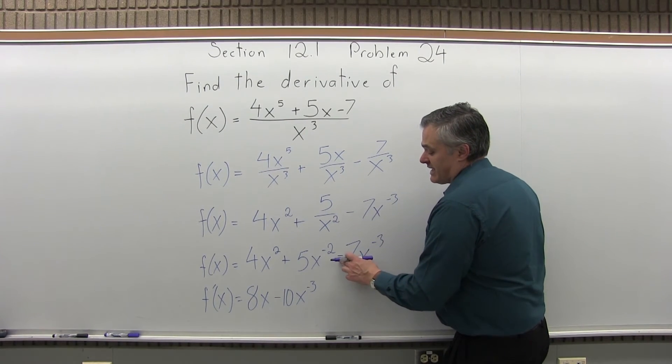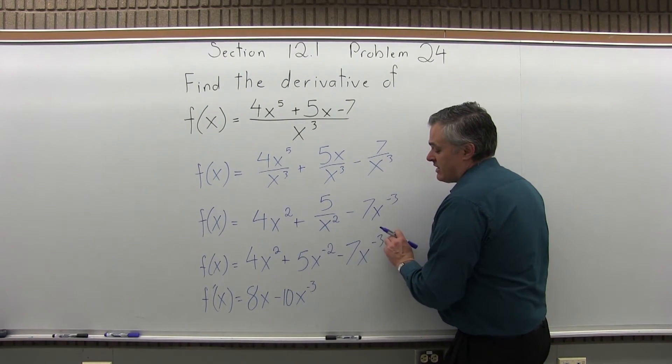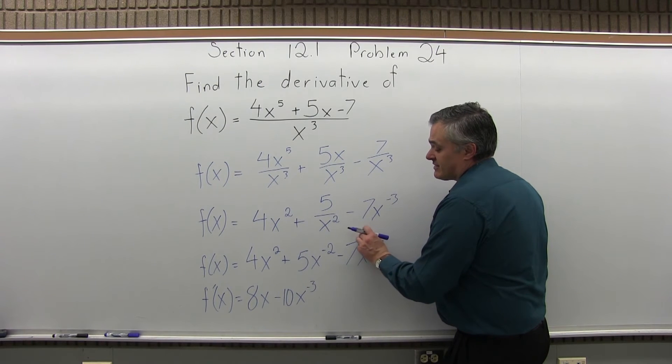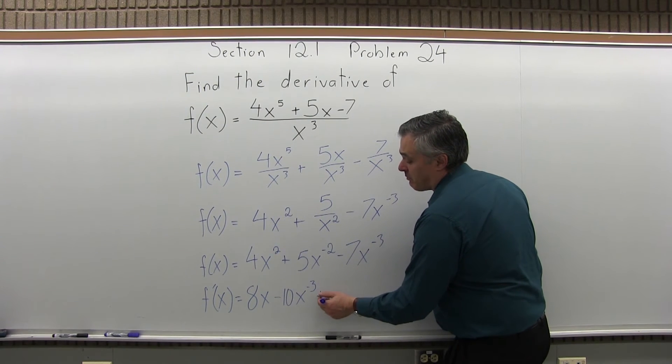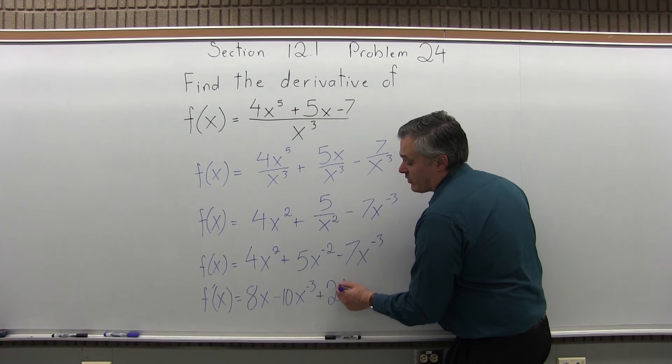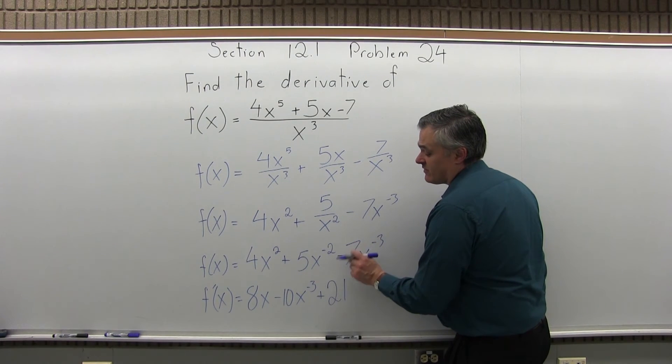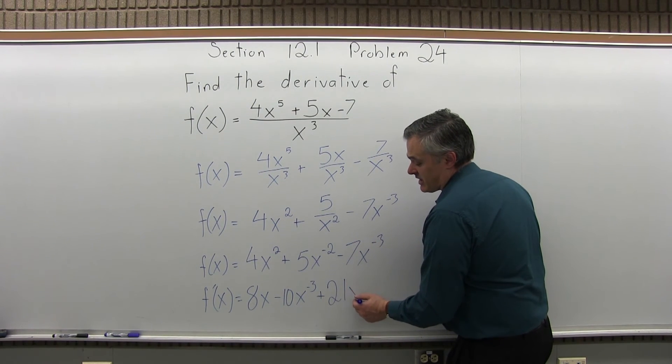And now the piece on the end, negative 7x to the minus 3. The exponent of minus 3 comes down times the negative 7 in front, making a plus 21. Negative times the negative becomes positive. You have to remember that. x to the one less power is negative 4.